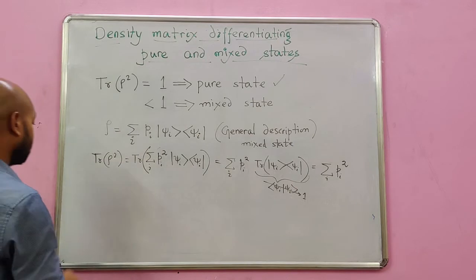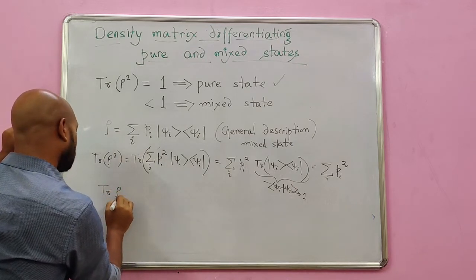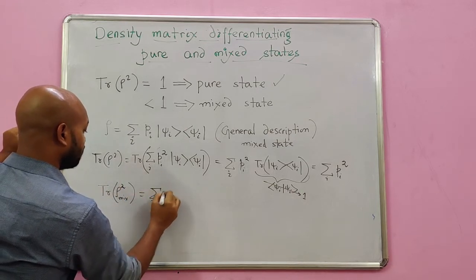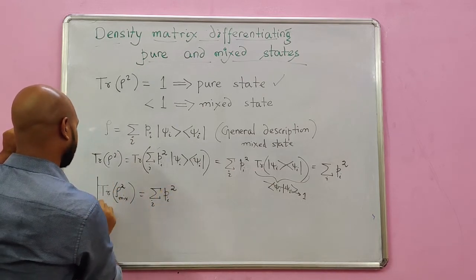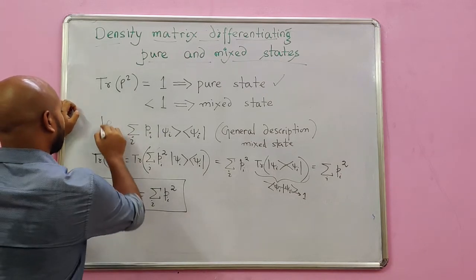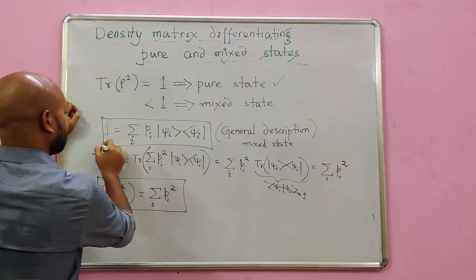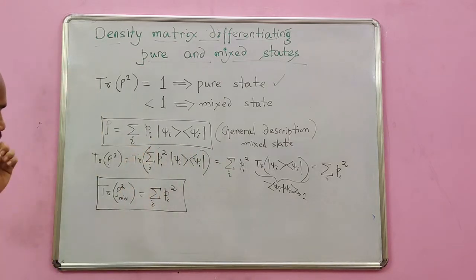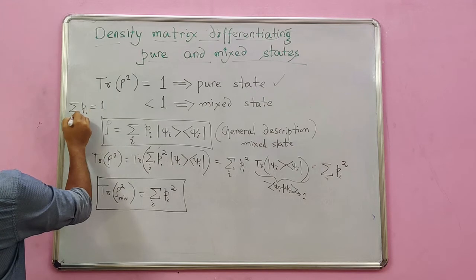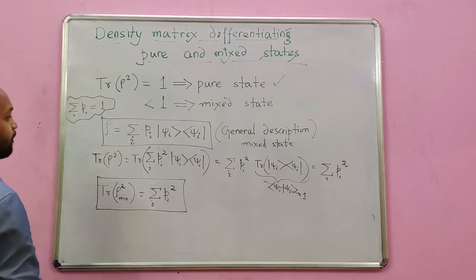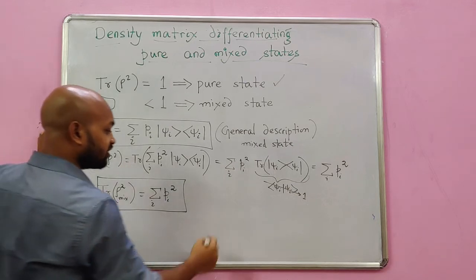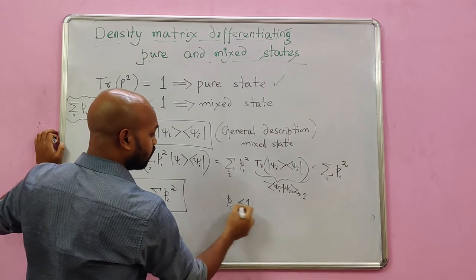That means the trace of rho mixed is finally coming to be pi squared. Let's recall that in this particular representation of a general quantum state or a mixed state, we take the summation pi to be 1. That goes with the definition of this code. And we also know that this pi is something that ranges between, pi ranges between 1 and 0.